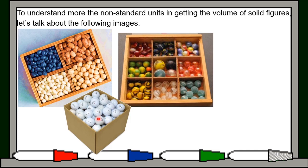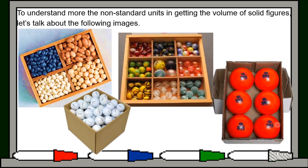Dito naman sa third box, maliliit na balls ang ginamit para mapuno yung isang box, so mas marami yung bilang. While dito sa last box, mas malalaking bola yung ginamit, kaya 6 na balls lang ay napuno na yung ating box. So mas mababa yung volume using non-standard units kapagka malaking balls ang ginamit mo. Pero kung maliliit na balls yan, hindi lamang 6 na balls ang magagamit mo para mapuno mo ang isang box.